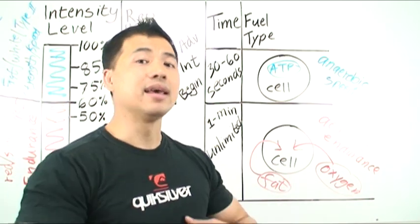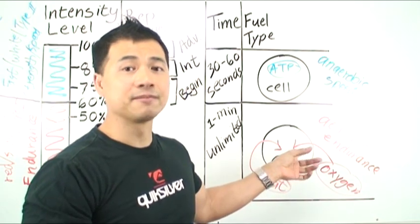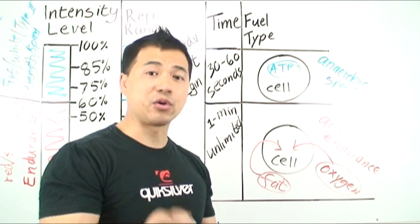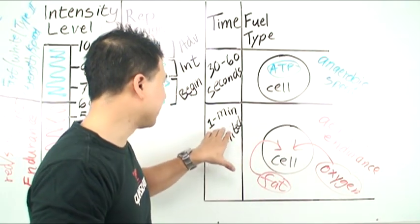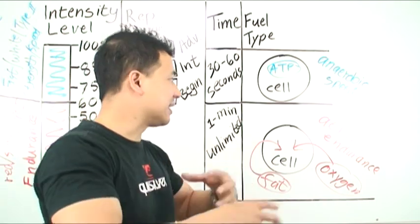That's the reason why when you're doing aerobic exercise it's good to breathe—because you're getting rid of the waste products these endurance cells are producing in your body. You can get rid of it quickly, and that's why you can train this for one minute to an unlimited time or a long period of time.